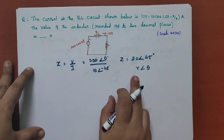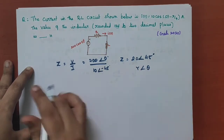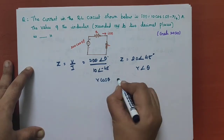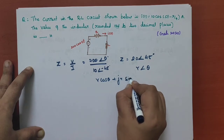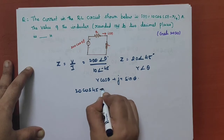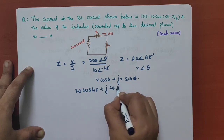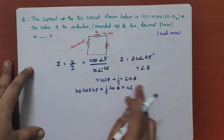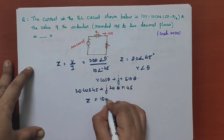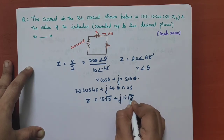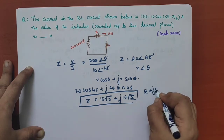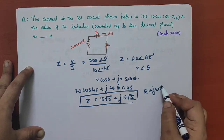It is in the polar form, that is R-theta form. We have to write it in rectangular form to find the value of L. To convert: R cos theta plus j R sine theta. So we can write 20 cos 45 plus j 20 sine 45. When we substitute the values, we get Z equal to 10 root 2 plus j 10 root 2. This is the value of the impedance, in the form R plus j omega L.